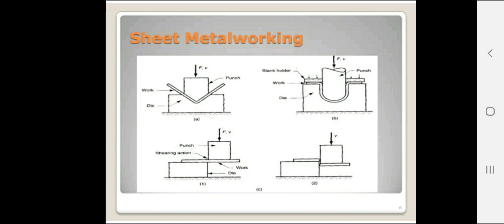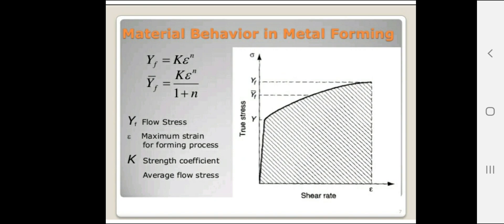Regarding flow stress, within the elastic limit stress is proportional to strain, but after yielding the stress rate increases and true stress also increases. The flow stress formula is: flow stress equals the strain coefficient multiplied by epsilon raised to n. The maximum strain for the forming process — when it is exceeded, the material gets permanently deformed.